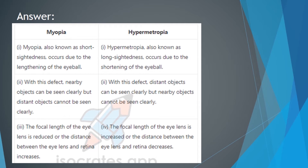distant objects cannot be seen clearly. You can remember this by remembering the other name of myopia — short-sightedness — meaning the object that is nearby, at a shorter distance, can be seen clearly. For hypermetropia, distant objects can be seen clearly, so long-sightedness means that if the distance is very long, it can be seen clearly.